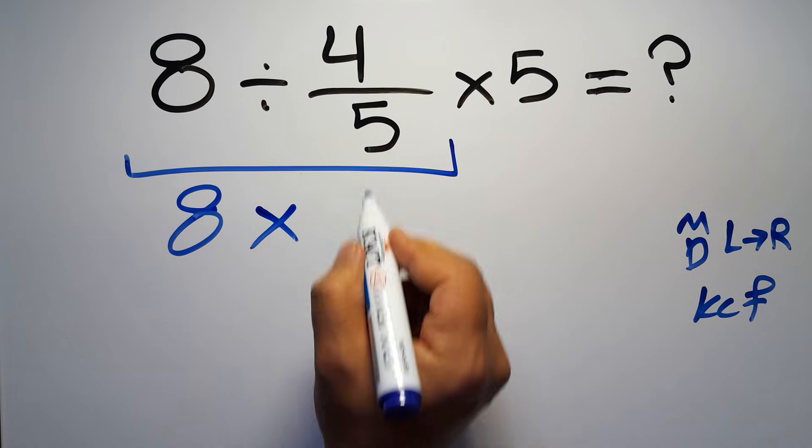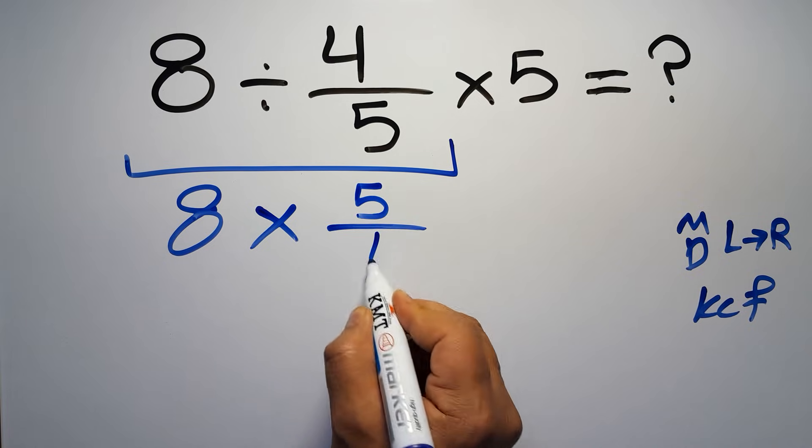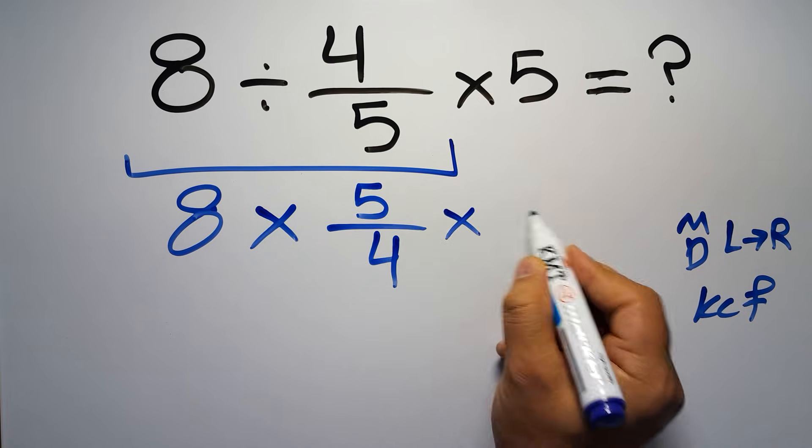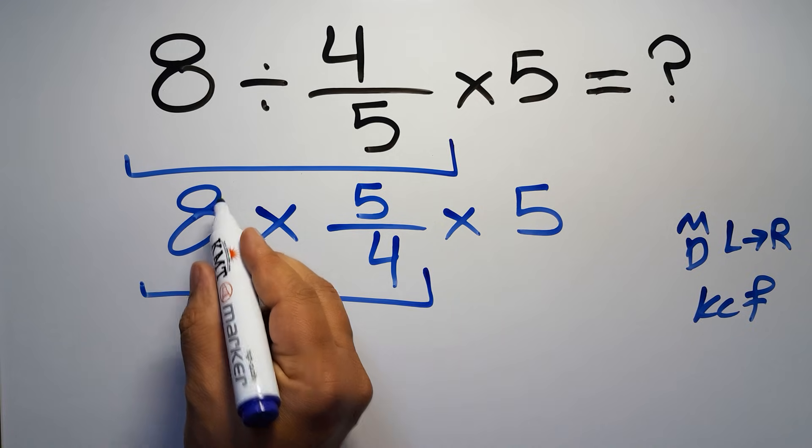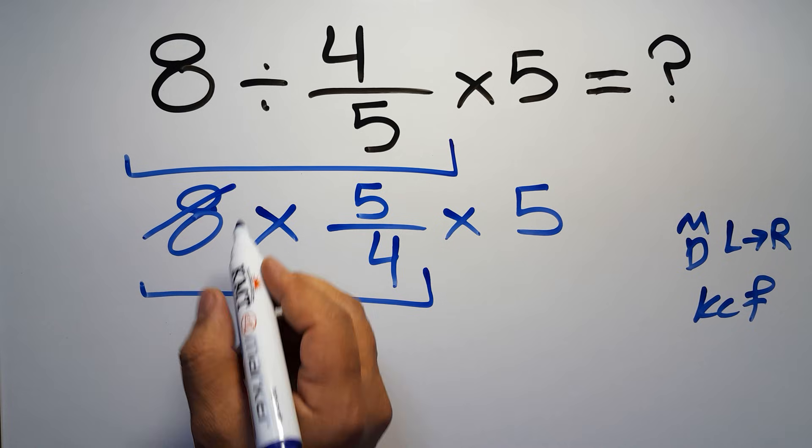Then times 5. Okay, 8 times 5 over 4. 8 divided by 4 gives us 2, and 4 divided by 4 is just 1. So here we have 2 times 5, which equals 10.